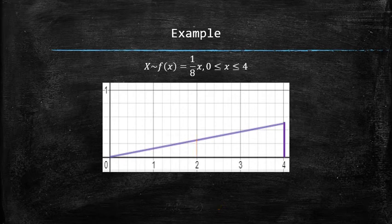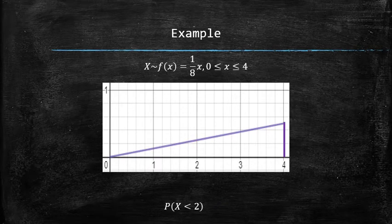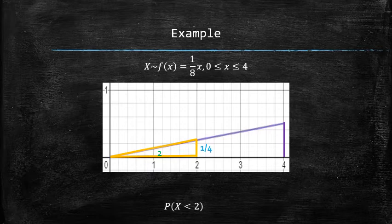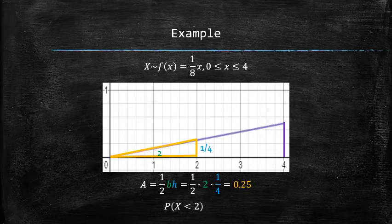To find the probability that x is less than 2, we will look for the area under the curve between 0 and 2. This region is a triangle with base 2 and height 1/4. The area can be found using the formula for the area of a right triangle and is equal to 0.25 or 25%.